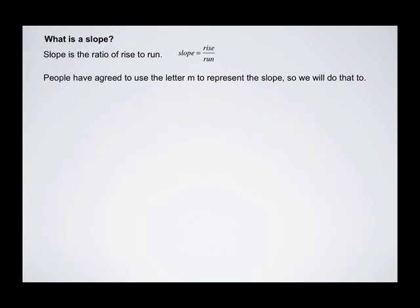What is a slope? Slope is the ratio of rise to run, given by slope equals rise over run. People have agreed to use the letter M to represent the slope, so we'll do that too. M equals rise over run, where M is the slope.